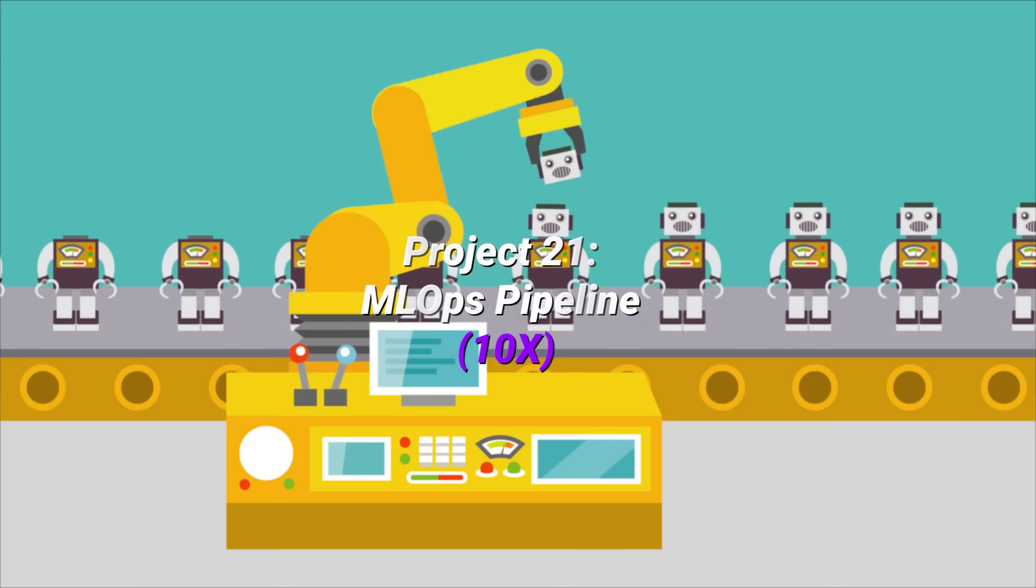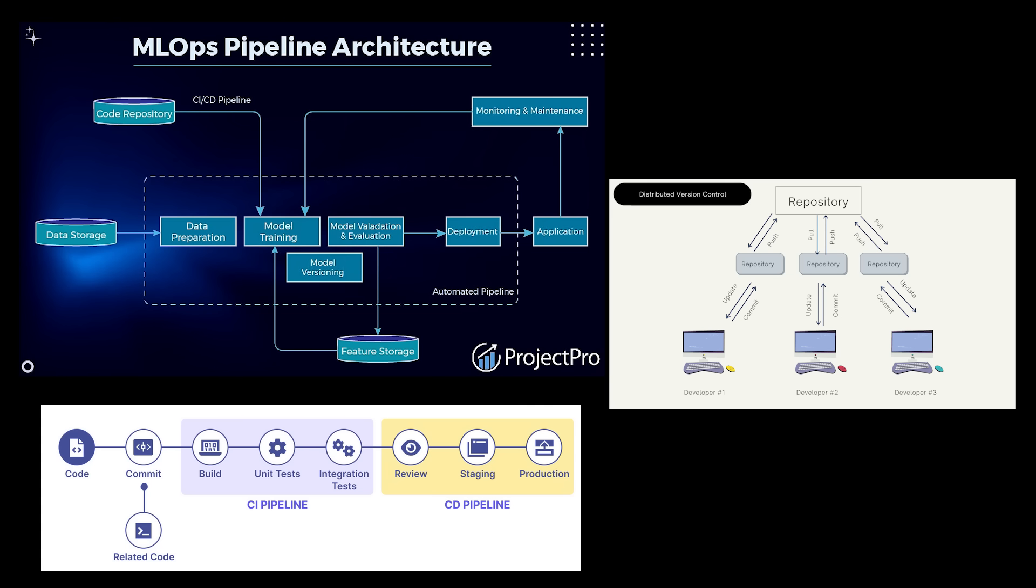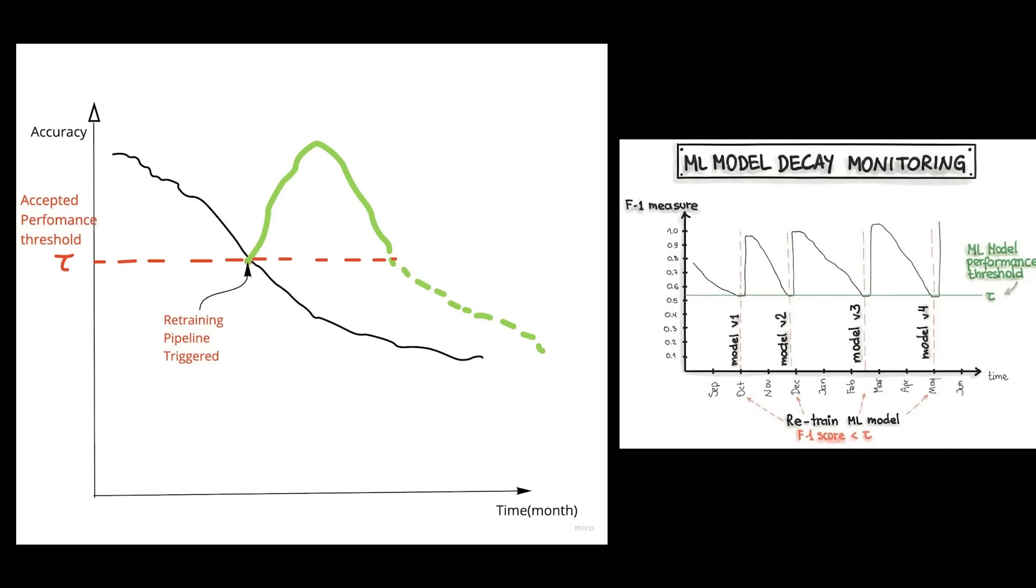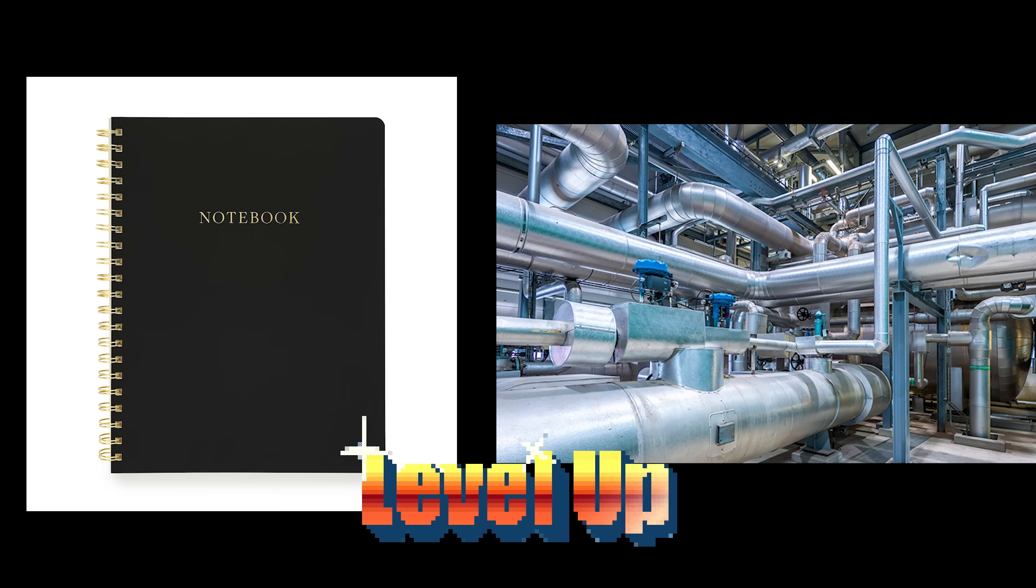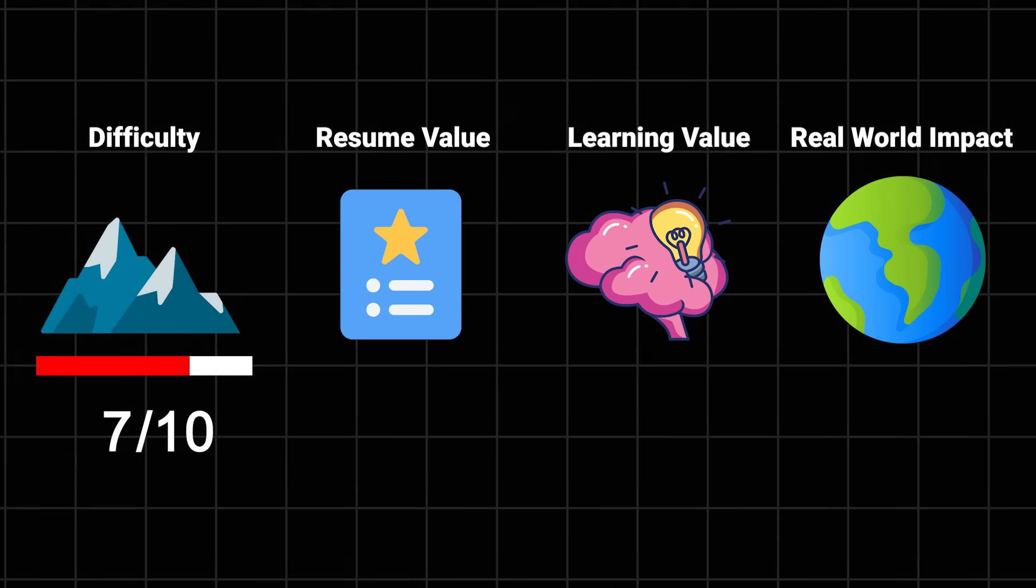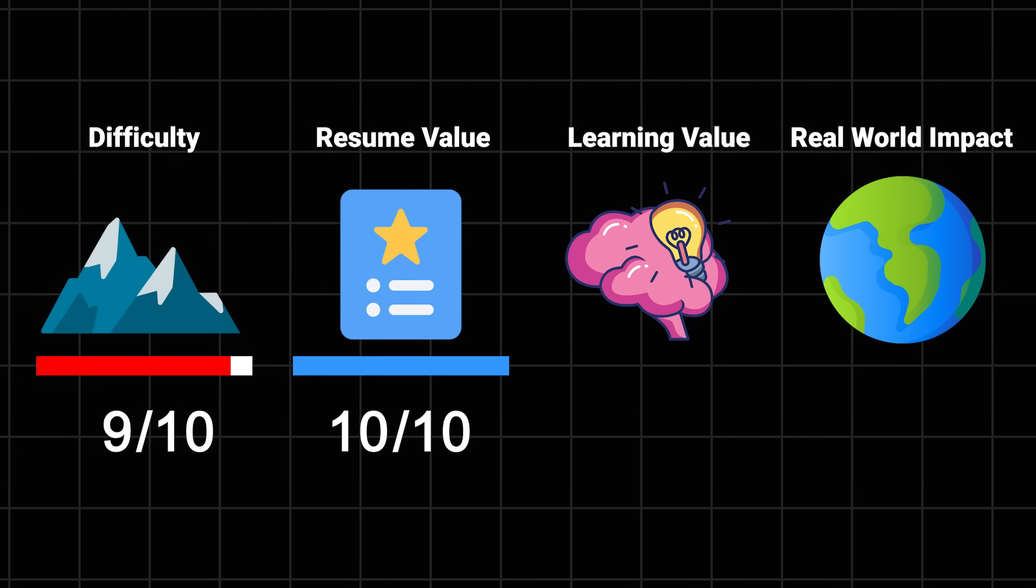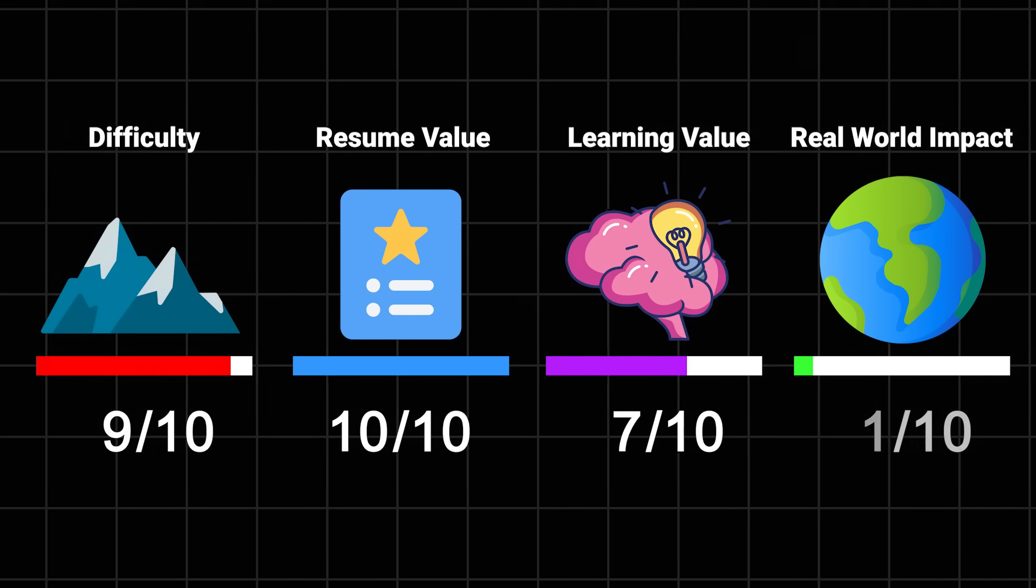MLOps pipeline. Welcome to the real world of machine learning. This isn't just about building models anymore - it's about getting them into production and keeping them running. You'll build a complete pipeline with model versioning, monitoring, automated retraining, and all those things that separate playground projects from production systems. Difficulty: 9 out of 10. Resume value: 10 out of 10 because you can finally honestly put MLOps on your resume. Learning value: 10 out of 10. Impact: 10 out of 10 because this is what companies actually need.